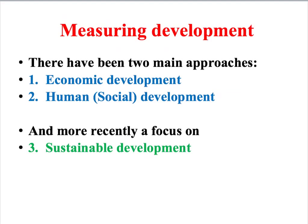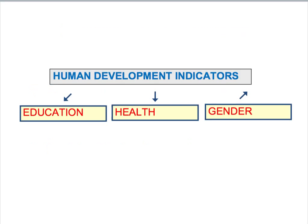Faced with this problem, alternative approaches have emphasised that any measurement of development must focus much more on human experiences — on the actual day-to-day experiences of populations and the opportunities open to them. Human measures of development, also called social development, focus on things like education, health, and gender equality.